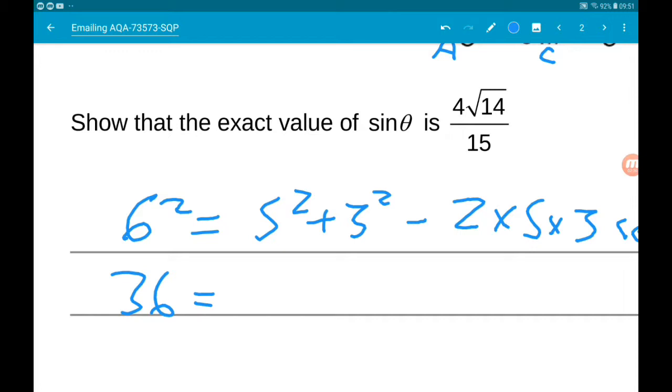So 36 is equal to 5 squared is 25, 3 squared is 9, 25 and 9 is 34.